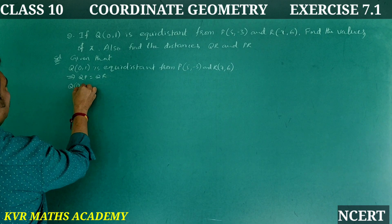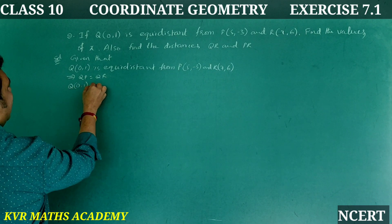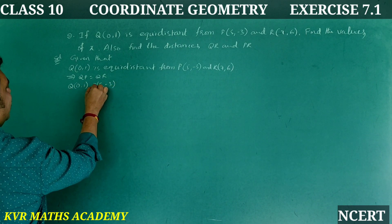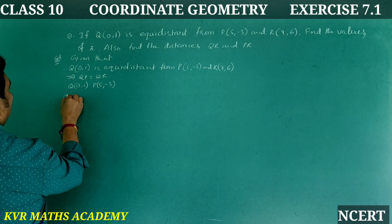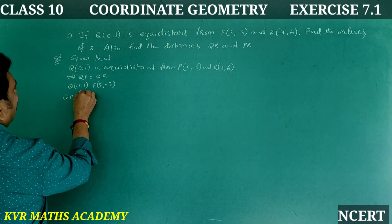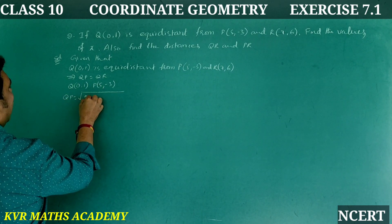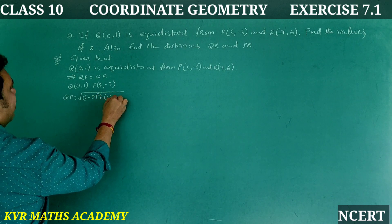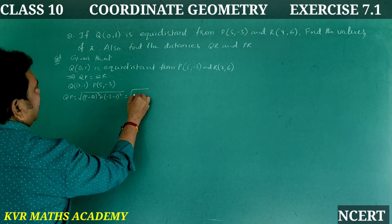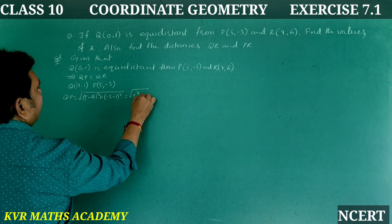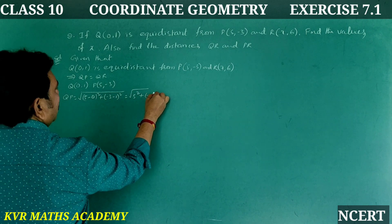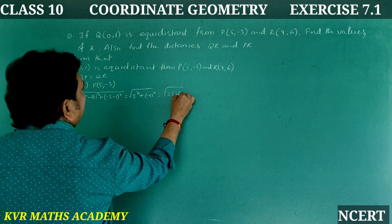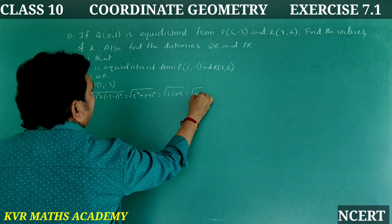Let us find QP. Q is (0,1) and P is (5,-3). By the distance formula, QP = √[(5−0)² + (−3−1)²] = √[5² + (−4)²] = √[25 + 16] = √41.